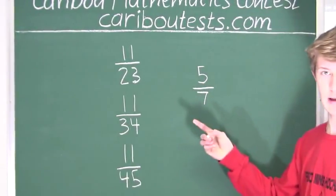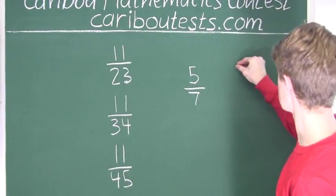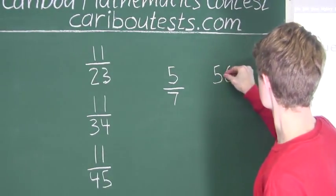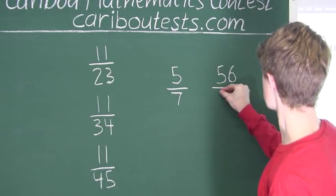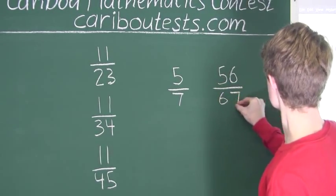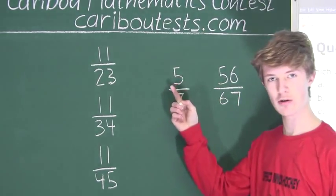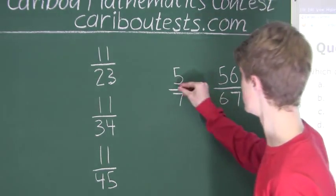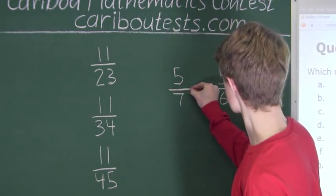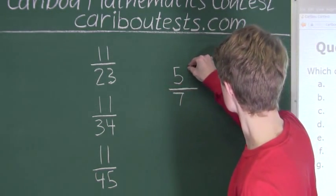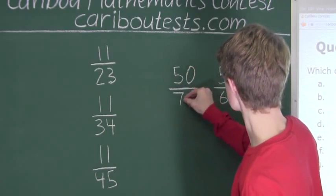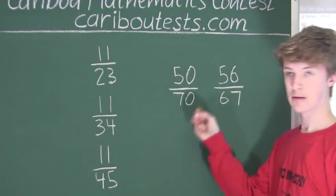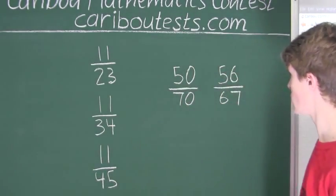We have 5 over 7 and 56 over 67. Now, we can also write 5 over 7 as 50 over 70. So now let's compare these two.